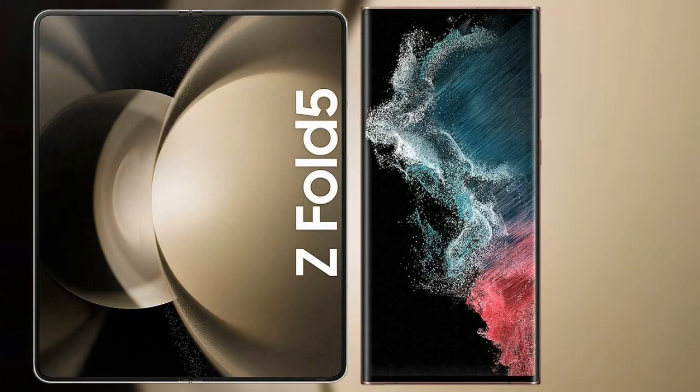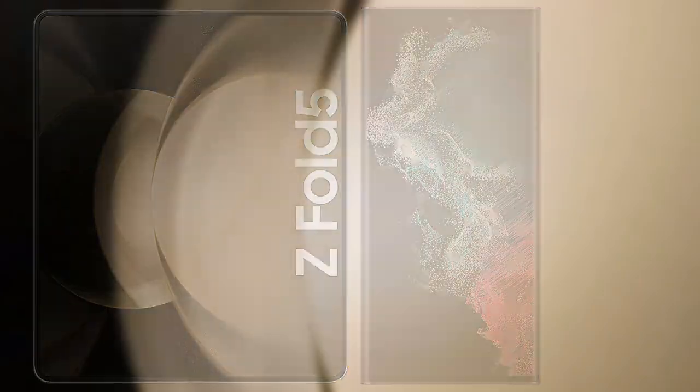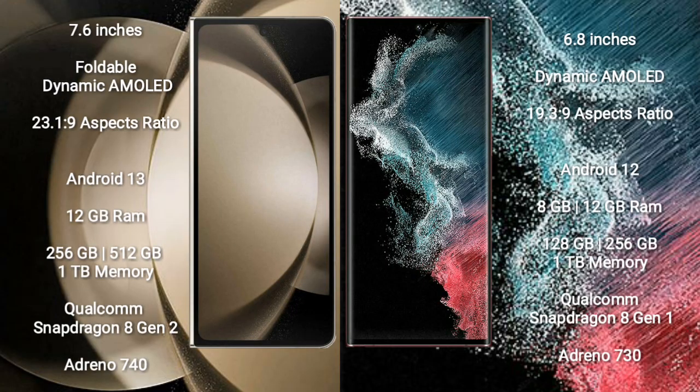I will compare the new Samsung Galaxy Z Fold 5 with the Samsung Galaxy S22 Ultra. The Galaxy Z Fold 5 comes with a 7.6-inch foldable dynamic AMOLED display and Gorilla Glass Victus 2. The Galaxy S22 Ultra comes with a 6.8-inch dynamic AMOLED display and Gorilla Glass Victus Plus.